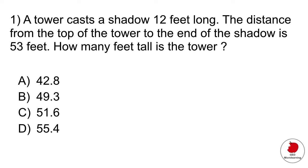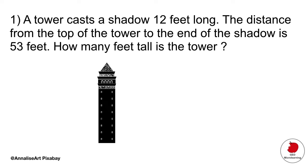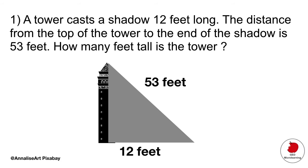Question one. A tower casts a shadow 12 feet long. The distance from the top of the tower to the end of the shadow is 53 feet. How many feet tall is the tower? So let's visualize the problem first. You have a tower and it's casting a shadow. They tell us that the shadow is 12 feet long and then the distance from the top to the end of the shadow is 53. They're asking us how tall the tower is.